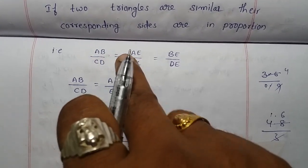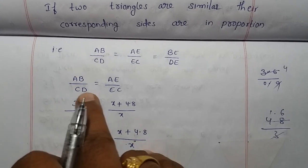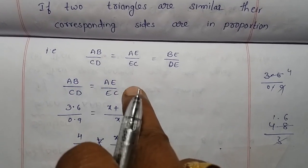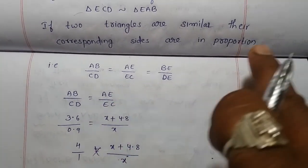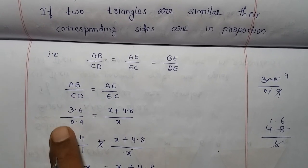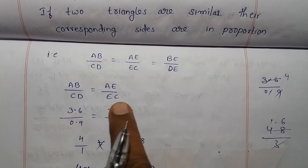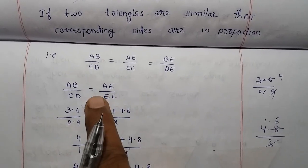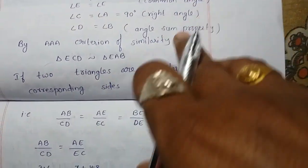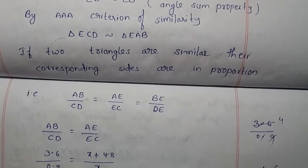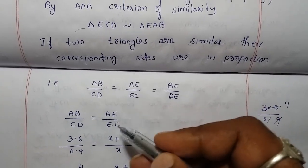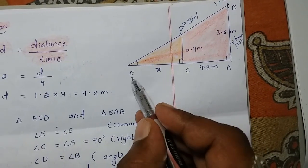Comparing the first and second ratios: AB/CD = AE/EC. Substituting the values: AB is the height of the lamp post = 3.6 m, CD is the height of the girl = 0.9 m, EC is the length of her shadow = x, and AE is the total distance from the lamp post = x + 4.8.